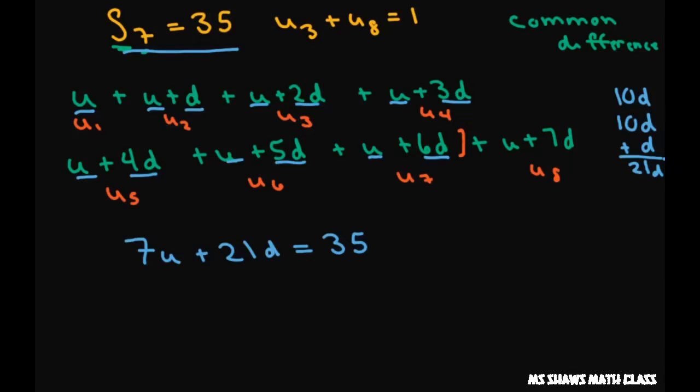Now we have that your third term plus your eighth term equals one. So your third term is U plus 2D and your eighth term here is U plus 7D. That equals one. So this gives you 2U plus 9D equals one.